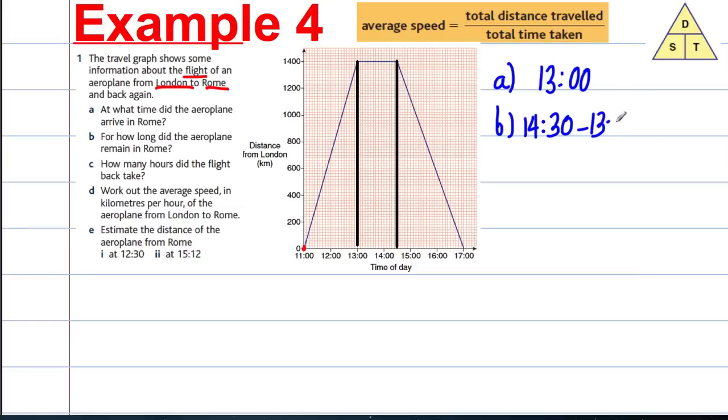Part C: how many hours did the flight take to get back? Well, we left at half past two and we got there at five o'clock, so it's two and a half hours.